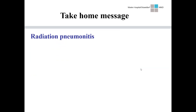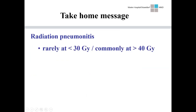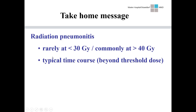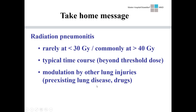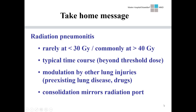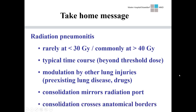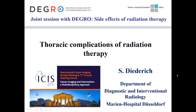Take-home points: radiation pneumonitis has a threshold — rare below 30 Gy, common above 40 Gy lung dose — but modulated by pre-existing lung disease and concomitant lung toxicity. There is a very typical time course: once you know when the threshold dose was reached, it's relatively easy to confirm whether the findings fit with radiation pneumonitis. The findings may be modulated by other lung injuries, and importantly the infiltration — ground glass first, consolidation later — mirrors the radiation port and crosses anatomical borders. Thank you.